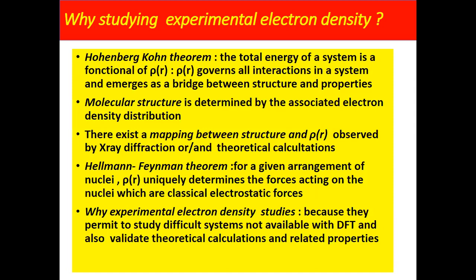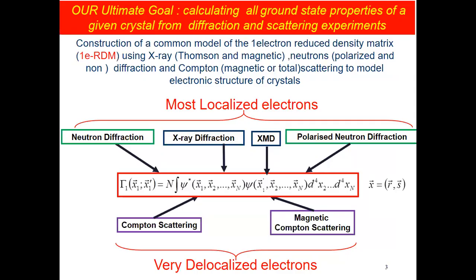Why do we want to do experimental electron density? It is because it permits us to study difficult systems which are sometimes not available with DFT calculation. This would also validate theoretical calculations and their related properties. Our ultimate goal is to construct experimentally a common model of the one-electron reduced density matrix using X-rays, non-polarized and polarized neutron diffraction, and Compton scattering. We use neutron diffraction to see the nuclei, X-ray diffraction to see the electron density, X-ray magnetic diffraction and polarized neutron to have the spin density.